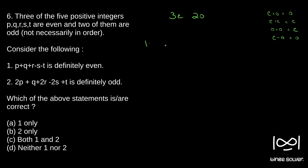We will take up the first statement: P plus Q plus R minus S minus T. We will split that into two parts — P plus Q plus R, and S minus T. For S and T, since we have three even and two odd, the possible combinations are: even-even, even-odd, or odd-odd.